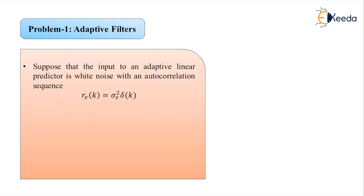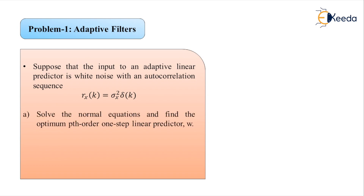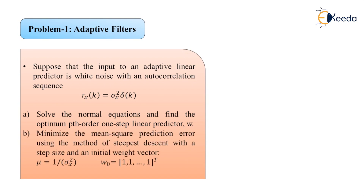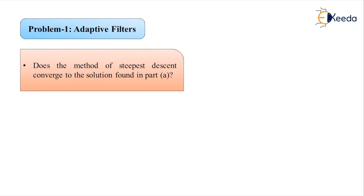The problem is divided into two parts, Part A and Part B. Part A asks to solve the normal equations and find the optimum p-th order one-step linear predictor w. Part B asks to minimize the mean square prediction error using the method of steepest descent with step size mu equal to 1 over 5 times sigma_x squared, and initial weight vector w_0 equal to the transpose of [1, 1, 1, ..., 1] of order p. Additionally, Part B asks whether the steepest descent method converges to the solution found in Part A.